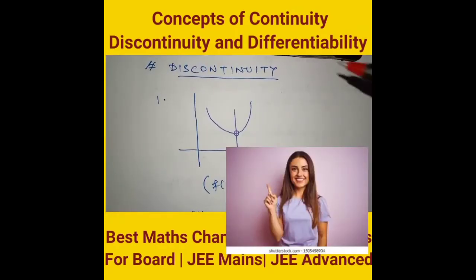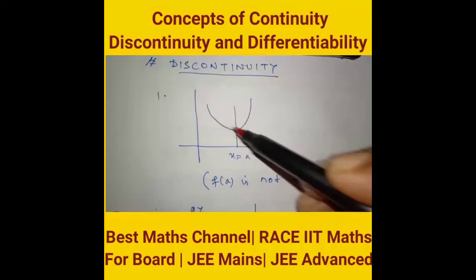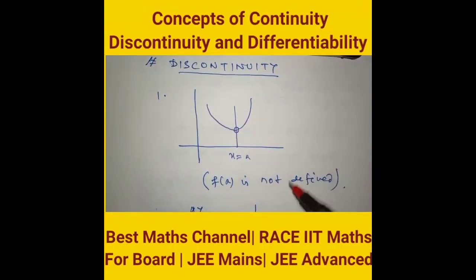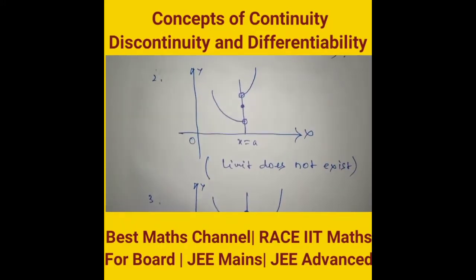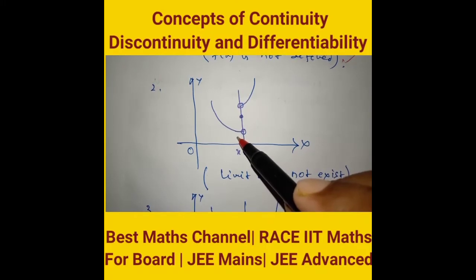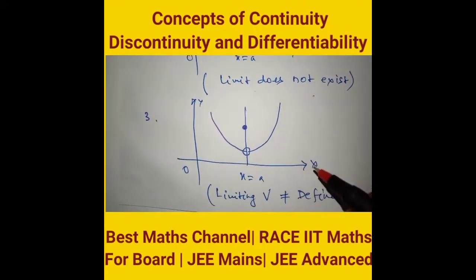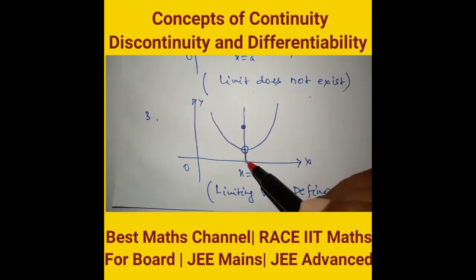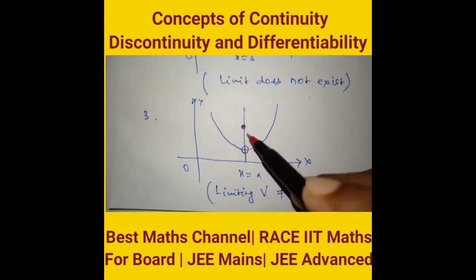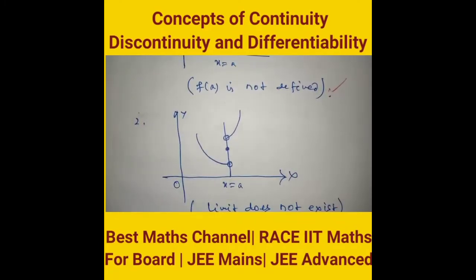About discontinuity: there are three cases — when the function is not defined, when the limit does not exist, or when the limiting value is not equal to the defined value. An open circle means f(a) is not defined. When right-hand limit and left-hand limit don't match at a point, the limit does not exist. These three cases must be known.